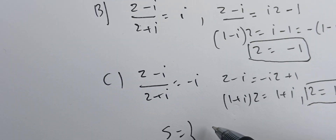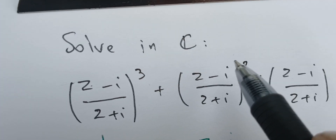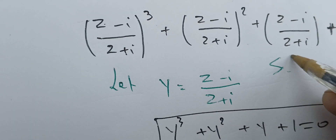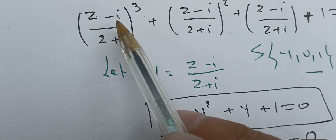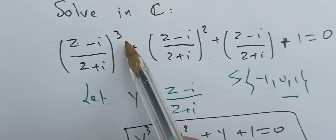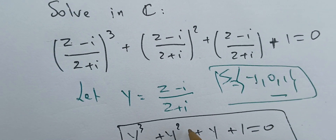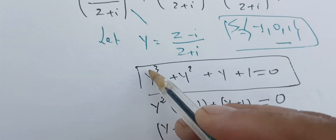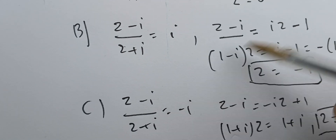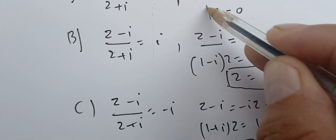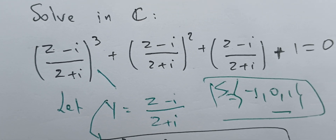So we get the three solutions: z equals minus one, zero, and one. We can go back to the original equation and plug in each of these values to verify. All three satisfy the equation. The set of solutions is {minus one, zero, one}. We used the variable substitution to simplify, solved the resulting equation, and verified all three solutions. Thank you very much — if you see any errors or mistakes, please let me know.